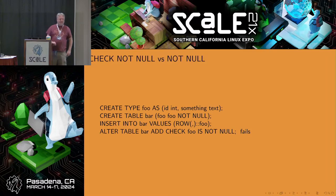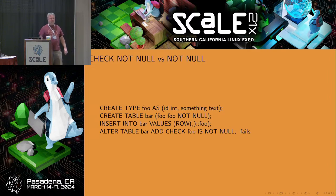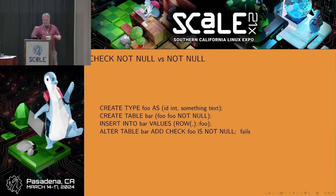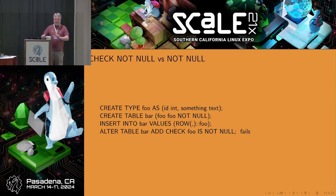Audience question: if the foo type was not a composite type — if it was a single value — would you still be able to do this with a row? The answer is no, because a row only works for a composite type. This is the syntax for how you would insert a composite type into an insert statement.